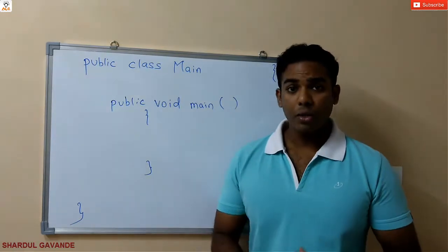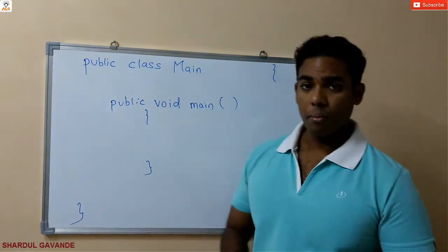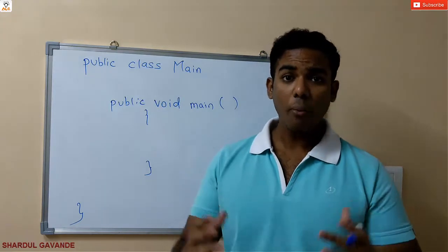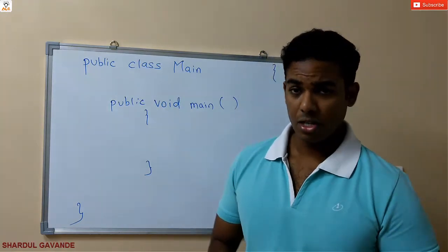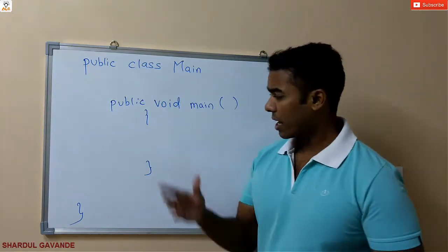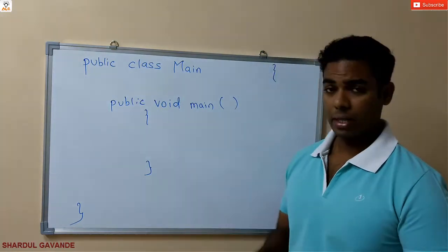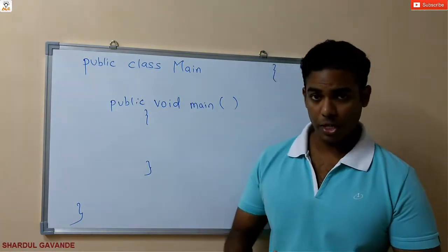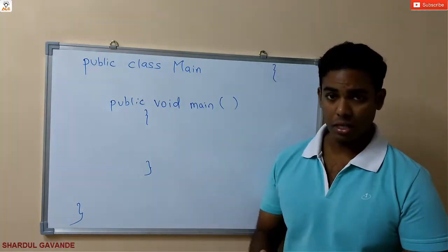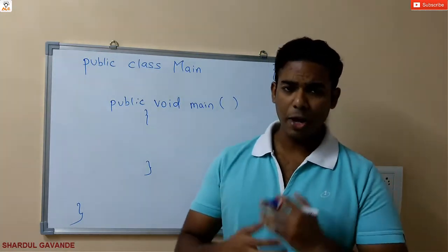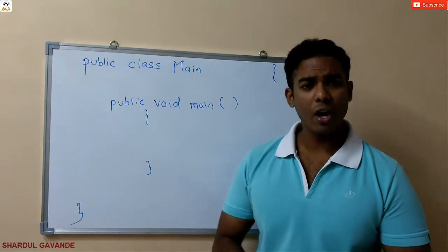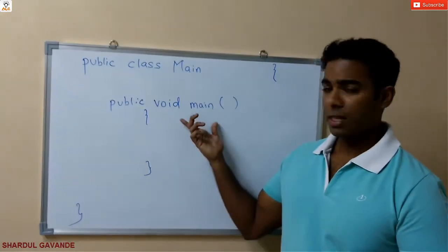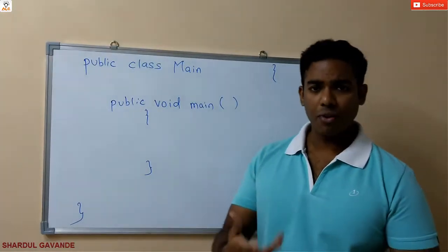But what we know is, in order to access methods, we need to create something called objects. So where can we create objects? This is our main method, and we have to create objects in order to access a method. But what if I say that I don't want to create an object and simply access this method with the help of the class name?